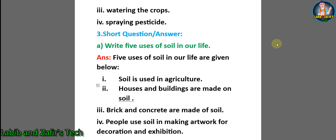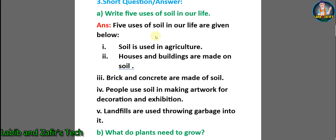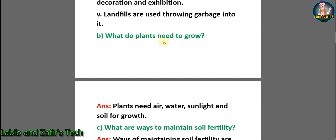Now dear students, let's go through some short question answers. A: write 5 uses of soil in our life. Answer: 1. soil is used in agriculture. 2. houses and buildings are made on soil. 3. brick and concrete are made of soil. 4. people use soil in making artwork for decoration and exhibition. 5. landfills are used for throwing garbage. B: what do plants need to grow? Answer: plants need air, water, sunlight, and soil for growth.